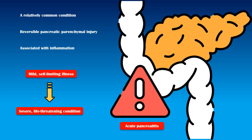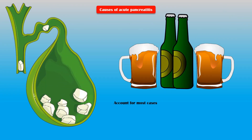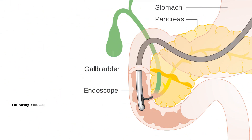In this video, I will discuss the major causes of acute pancreatitis. Gallstones and alcohol account for most cases. Some people develop acute pancreatitis following an endoscopic retrograde cholangiopancreatography, a procedure used to diagnose and treat conditions in the biliary tree. About 10% of acute pancreatitis cases are idiopathic, meaning there is no identifiable cause.